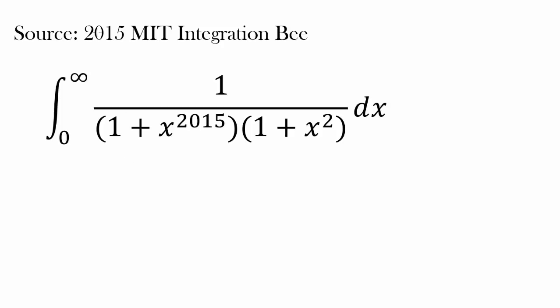This question is from the 2015 MIT integration bee. They gave us a power of x to the 2015. We have to evaluate the integral from 0 to infinity of 1 over the quantity (1 plus x to the 2015) times (1 plus x squared) dx.